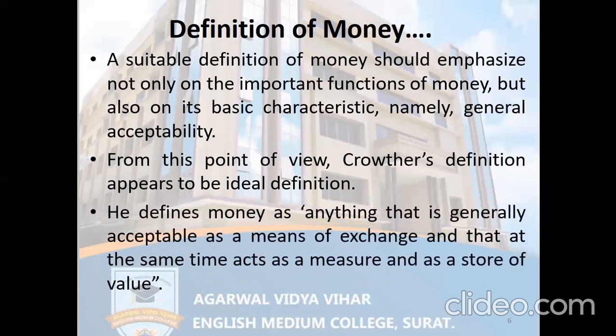Crowther says money is anything that is generally acceptable as a means of exchange and at the same time acts as a measure and store of value. He is emphasizing on acceptability as a means of exchange — the commodity considered as money must be acceptable as a medium of exchange — and simultaneously it must act as a measure and store of value. These two terms will be discussed when we discuss the functions of money.